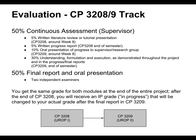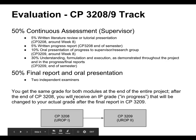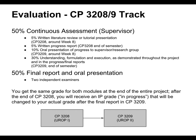50% is due to your supervisor and 25% due to each of the independent examiners. You'll get an IP grade after the first semester if you're doing a two-semester UROP. Your CAP will be back-calculated to the previous semester when you get your grade for CP3209.